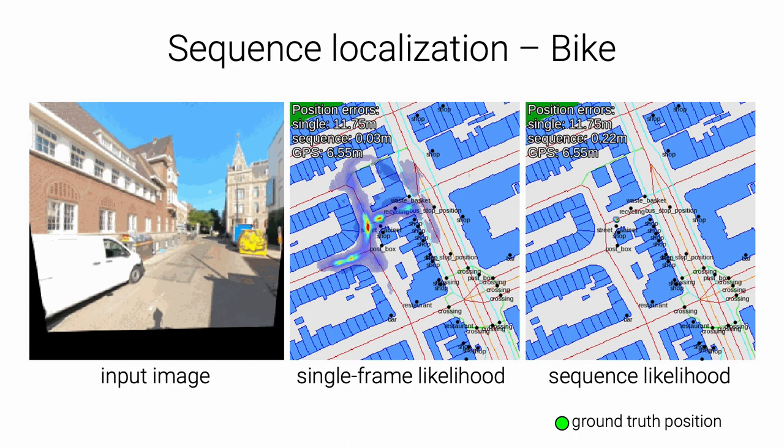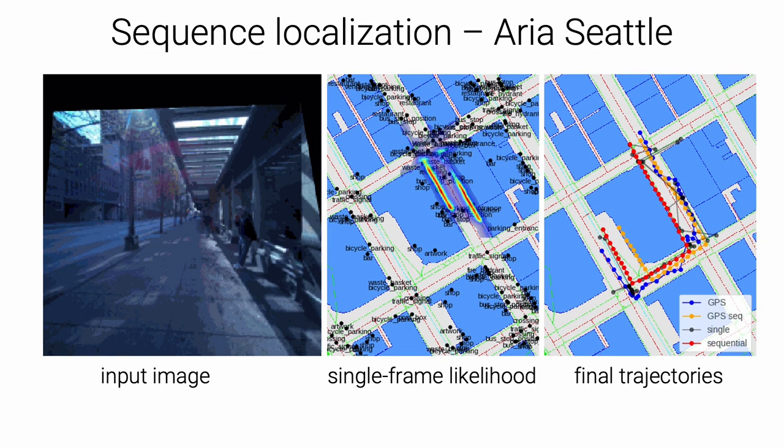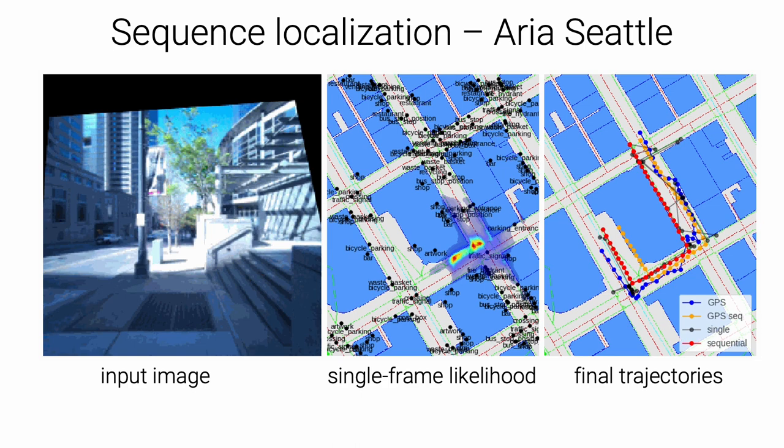Fusing GPS signals over time, here shown in orange, is often not reliable because their noise is biased. In contrast, fusing predictions of our network, here in red, is reliable even though the single frame predictions are often multimodal.